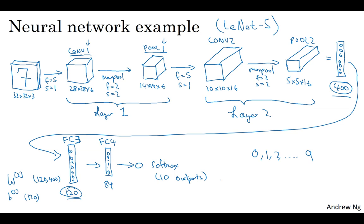But for now, I just want to point out that as you go deeper in the neural network, usually the height and width will decrease. It goes from 32 by 32 to 28 by 28 to 14 by 14 to 10 by 10 to 5 by 5. So as you go deeper, usually the height and width will decrease, whereas the number of channels will increase, gone from 3 to 6 to 16, and then your fully connected layers at the end.